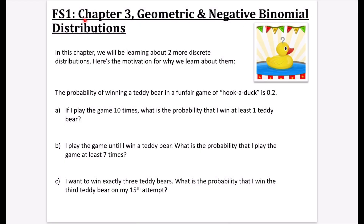We're going to be doing Further Stats 1, Chapter 3, which is the geometric and negative binomial distributions. In this chapter, we're going to be learning about two more discrete distributions - the outcomes are discrete, which is basically what most of Further Stats 1 is. Here's the motivation for why we're going to be learning about them. We're going to try and see how these things are different.